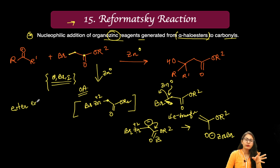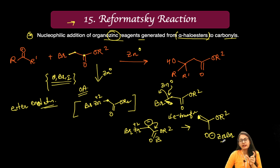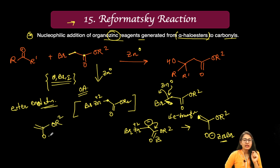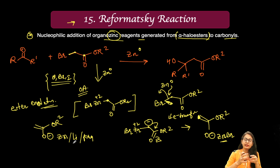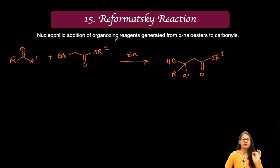The ester enolate attacks from the alpha carbon, not from the carbonyl carbon. There is no O-alkylation when a metal like zinc, lithium, or magnesium is covalently bonded to the oxygen, because these metals strongly coordinate oxygen. With these metals, C-alkylation is highly favored.